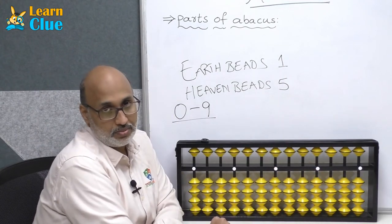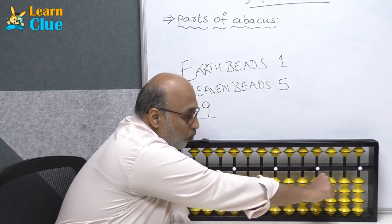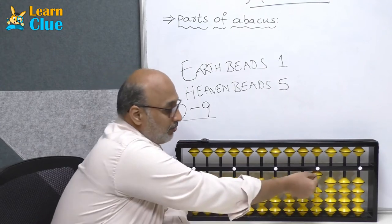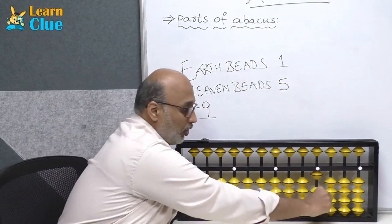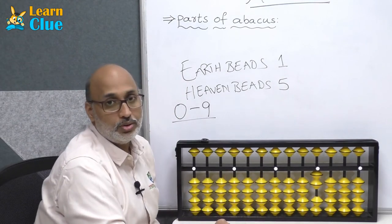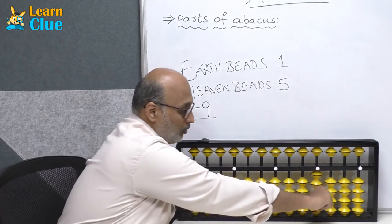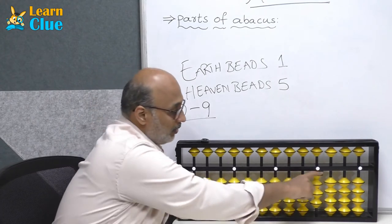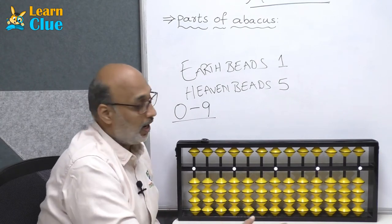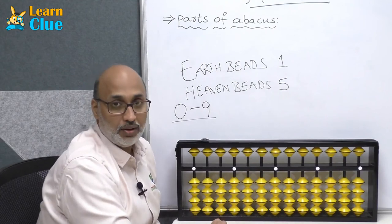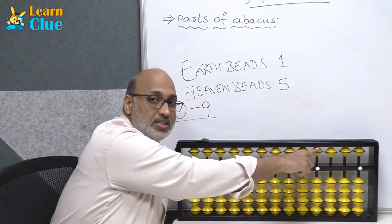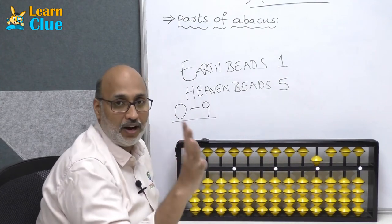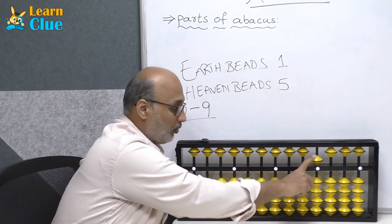Let us consider one of the unit dots as the unit space. If I move one earth bead towards the unit bar, the value is 1. Adding one more bead makes it 2, then 3, then 4. If I move all beads away from the unit bar, the value is 0. The heaven bead carries a value of 5.